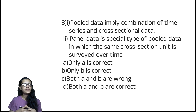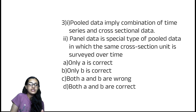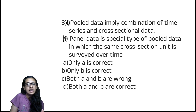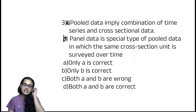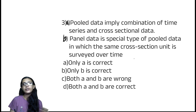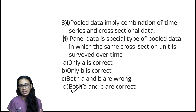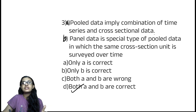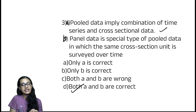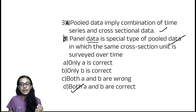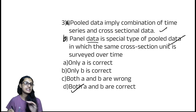The next question: pooled data implies a combination of time series and cross-section data. Panel data is a special type of pooled data in which the same cross-section unit is surveyed over time. Both A and B are correct. Pooled data mixes time series and cross-section data. Panel data is basically a special type of pooled data.